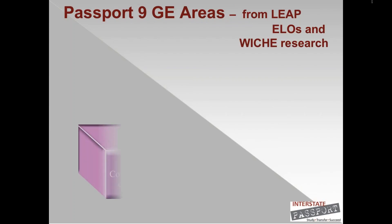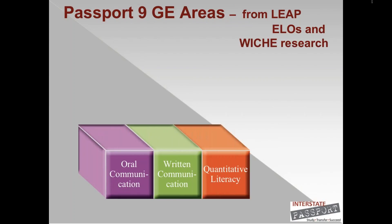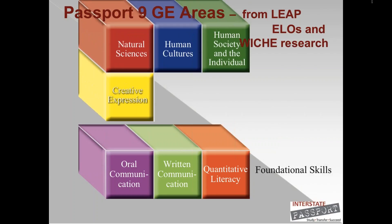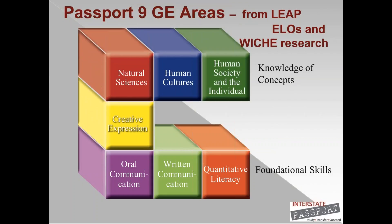The passport framework consists of nine GE areas with PLOs and proficiency criteria developed in each. There are three foundational skills: oral communication, usually a speech course or equivalent; written communication, a writing course or equivalent; and quantitative literacy, usually a math course or equivalent. There are also four knowledge areas, including the natural sciences, which consists of astronomy, biology, chemistry, geology, physics, and others.